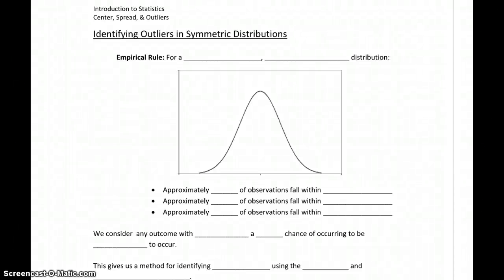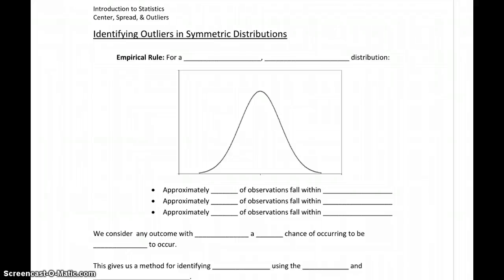We've looked at how to calculate center and how to calculate spread using two different methods, depending on whether we're dealing with a symmetric or approximately symmetric distribution, or something that's highly skewed. Now we want to talk about outliers — identifying outliers for two different types of distributions. The methods are quite different, so we want to separate these and talk about them individually.